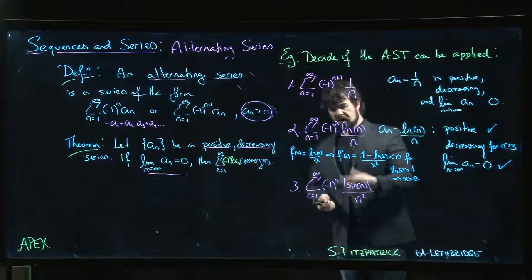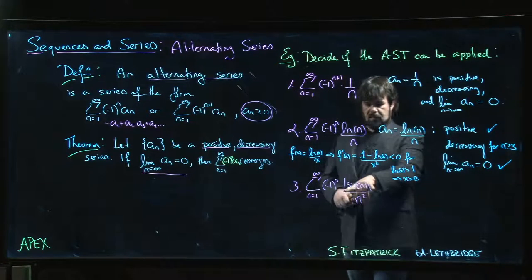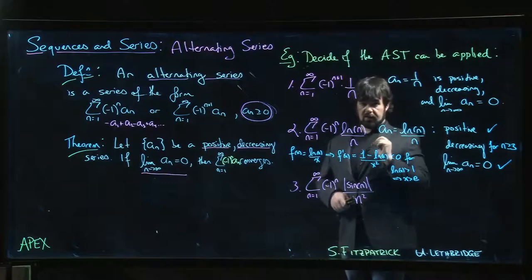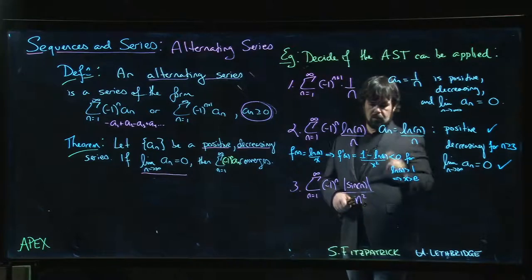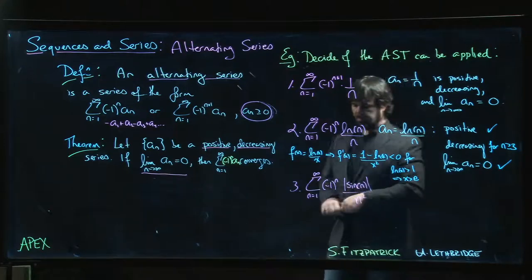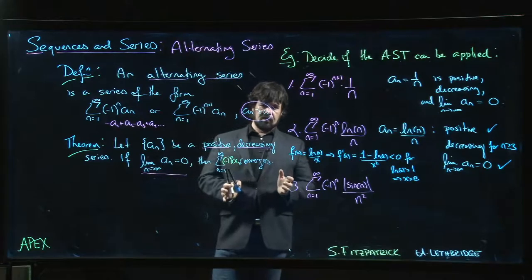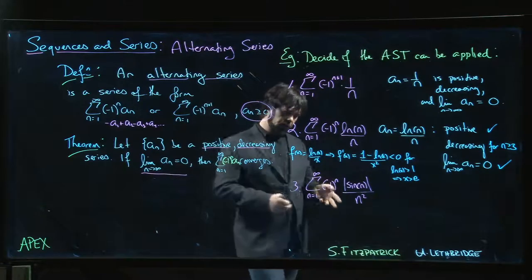So that works. But then we come to this last one. We get sine of n over n squared. The absolute value makes sure that things are positive, so we've got that. Again, definitely the limit is zero because this is bounded and n squared is going to go to infinity.